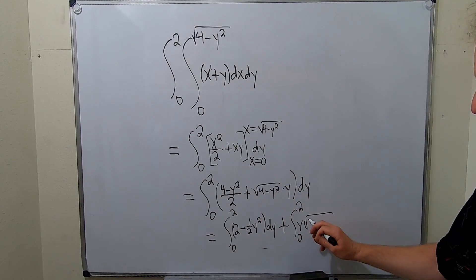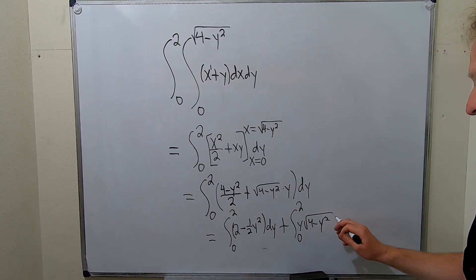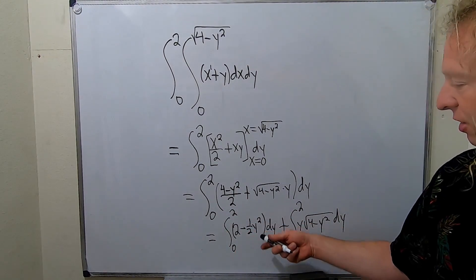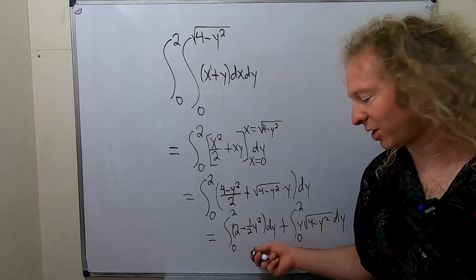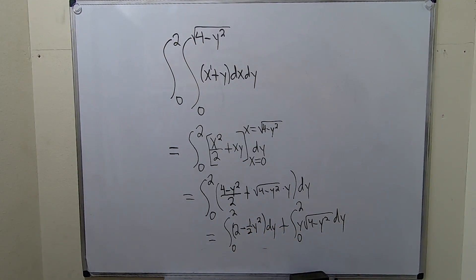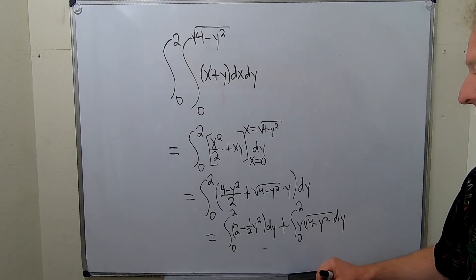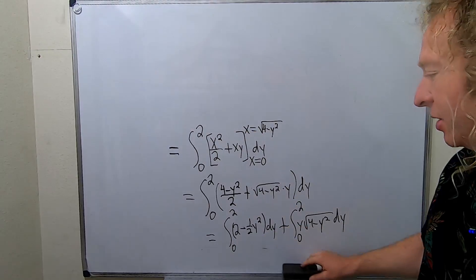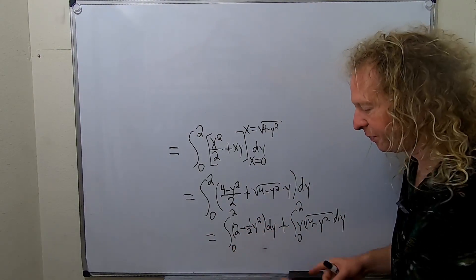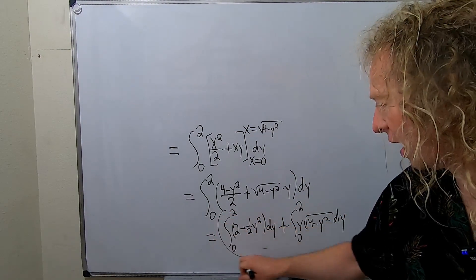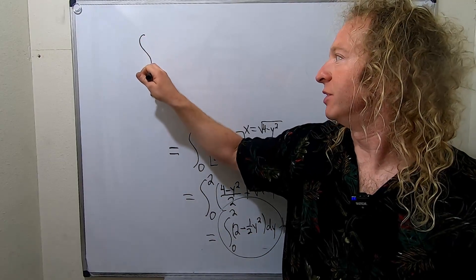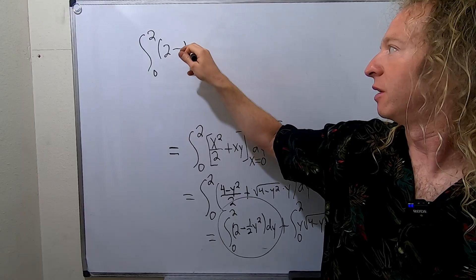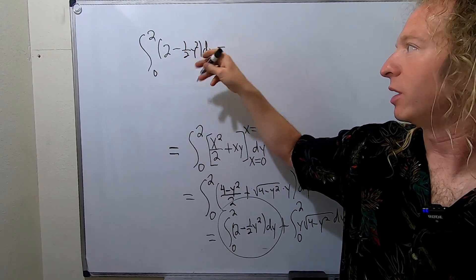The reason I'm breaking it up is because one part requires a u-substitution and the other does not, so we really have to separate them. This is a pretty straightforward integral — just a bit nasty because of the fractions. I'll erase the original question to make room and work out each one individually. So first: the definite integral from 0 to 2 of 2 minus one-half y squared dy.